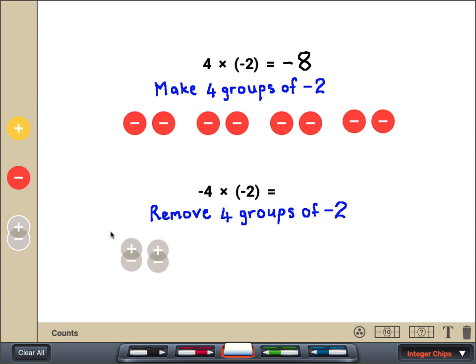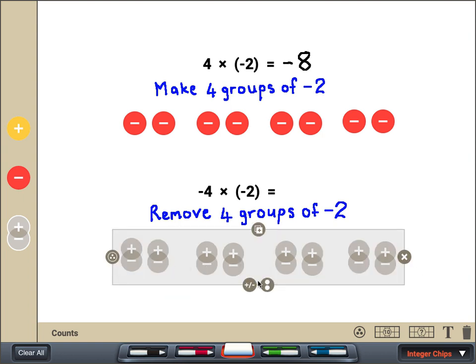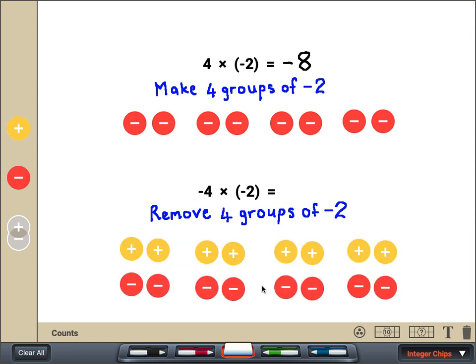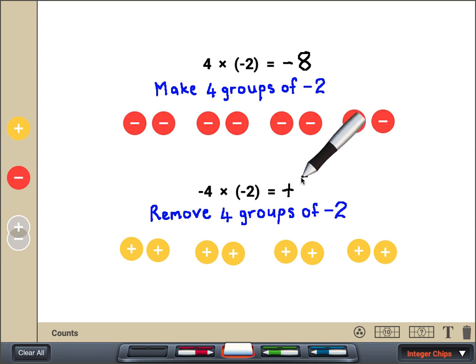Well, we can always add zero pairs because they have no value. So after adding a bunch of nothings, we break them apart. And now we can remove 4 groups of negative 2. We are left with 8 positive counters, so negative 4 times negative 2 equals positive 8.